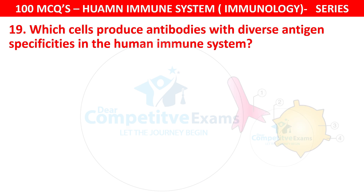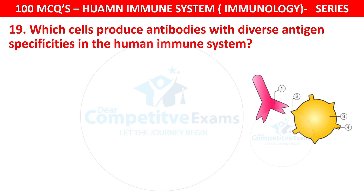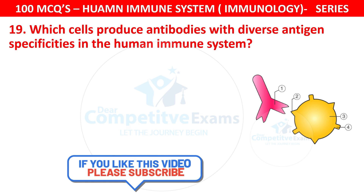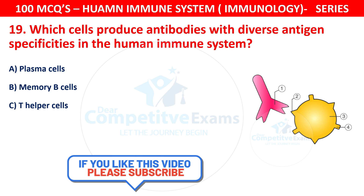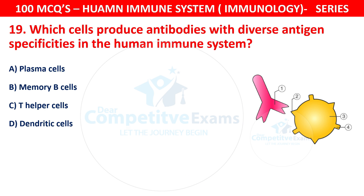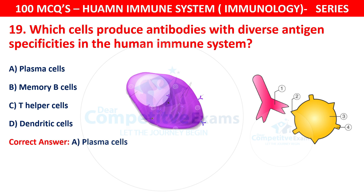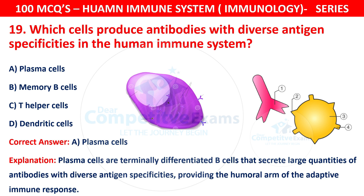Question 19. Which cells produce antibodies with diverse antigen specificities in the human immune system? The options are plasma cells, memory B cells, T helper cells, or dendritic cells. The correct answer is A — plasma cells. Plasma cells are terminally differentiated B cells that secrete large quantities of antibodies, providing the humoral arm of the adaptive immune response.